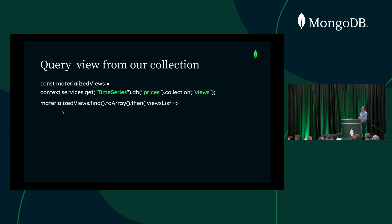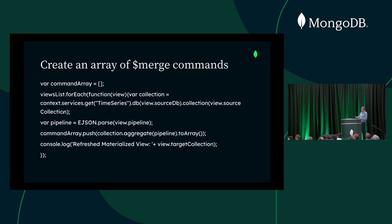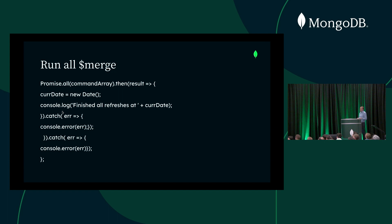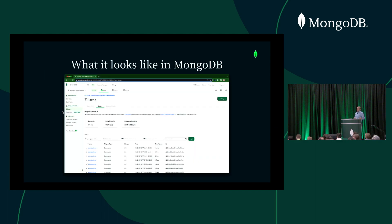There's some code here taken from the MongoDB blog — search for 'automatically refreshing materialized views' and you'll find the exact same code. In summary, we query the view we created from our specified collection, create an array of all the merge commands, and then execute them. If configured correctly, in Atlas trigger logs we can see this trigger being executed every minute with a successful OK status, showing we've been refreshing our materialized views successfully every single minute.